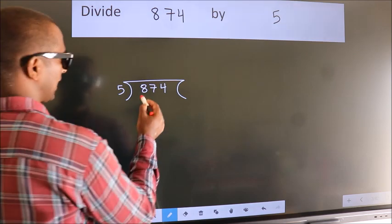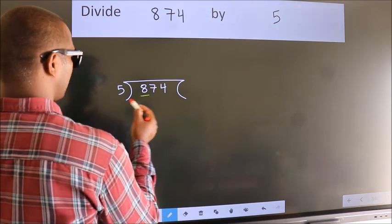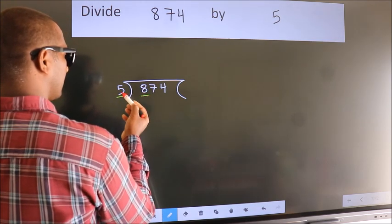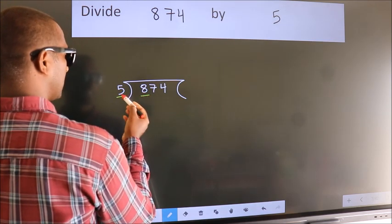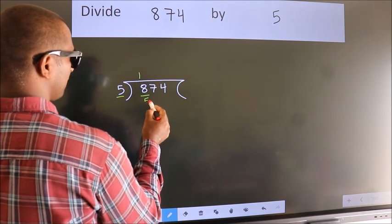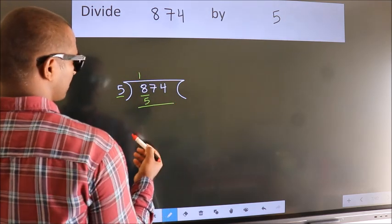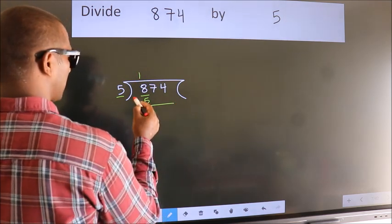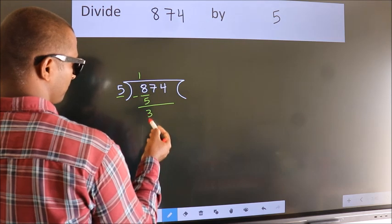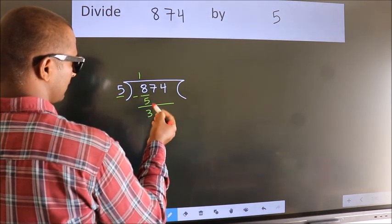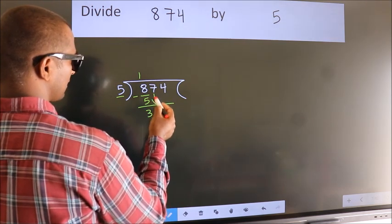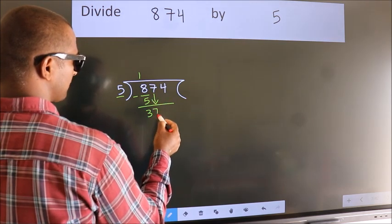Here we have 8, and here 5. A number close to 8 in the 5 times table is 5 once, which is 5. Now we should subtract — we get 3. After this, bring down the beside number, so 7 comes down.